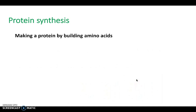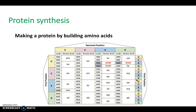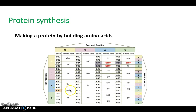Making a protein by building amino acids is essentially what happens. This codon table is really important to be able to read. You need a first position, a second position, and a third position in your codon. For example, if we have A, U, and G — by looking up A in the first position, U in the second, and G in the third — we end up with a specific amino acid. That is how you read one of these tables.